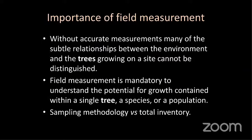When we measure or calculate an estimate of growing stock, we need field information, because until and unless you have field measurements, you can't do any modeling. As mentioned, without ground sensing, remote sensing has no sense — if you do remote sensing without ground truth, it cannot give you any accurate information. So we need to do actual ground measurements, particularly for growing stock estimates and any other forest estimates. Without detailed measurement, we can't understand the potential of growth contained within a single tree species or even a population.